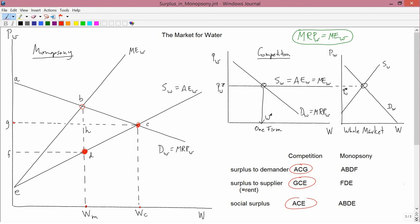Next, how about under monopsony? So in monopsony, remember point D is the point that connects WM, which is the monopsony quantity, and point F, which is the monopsony price.